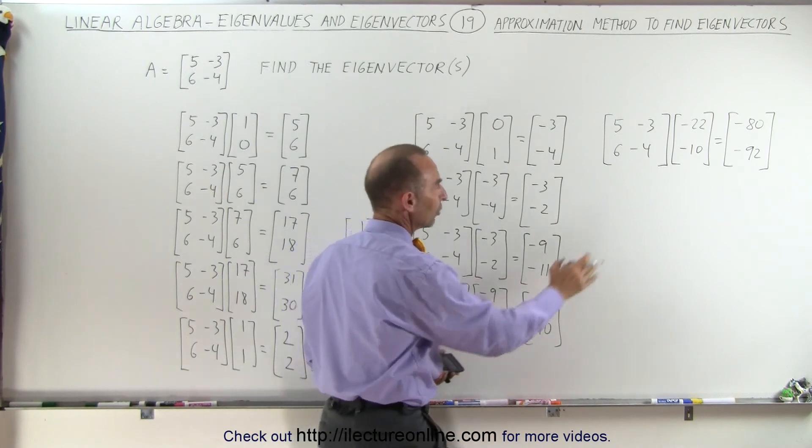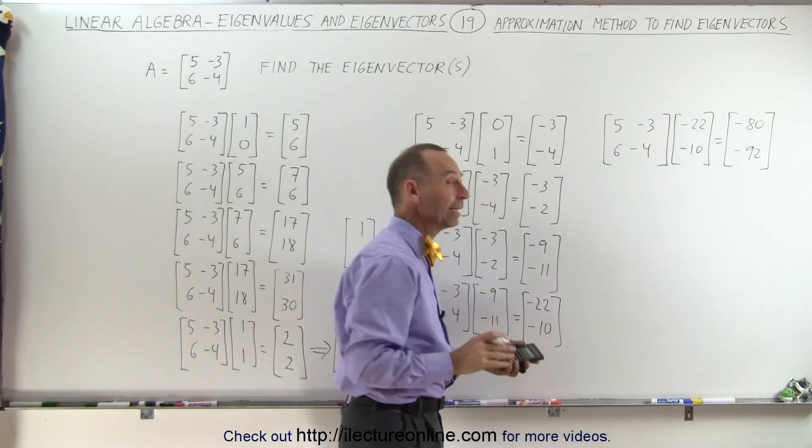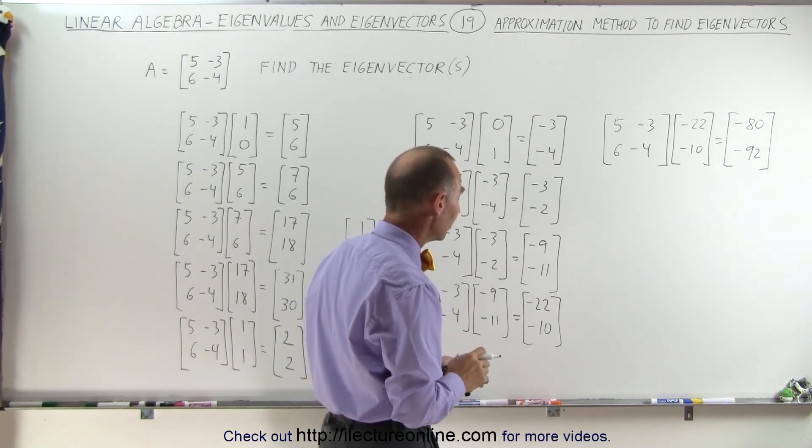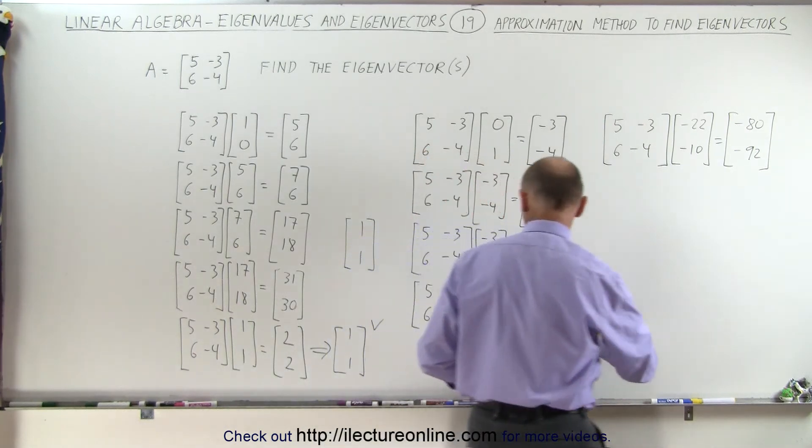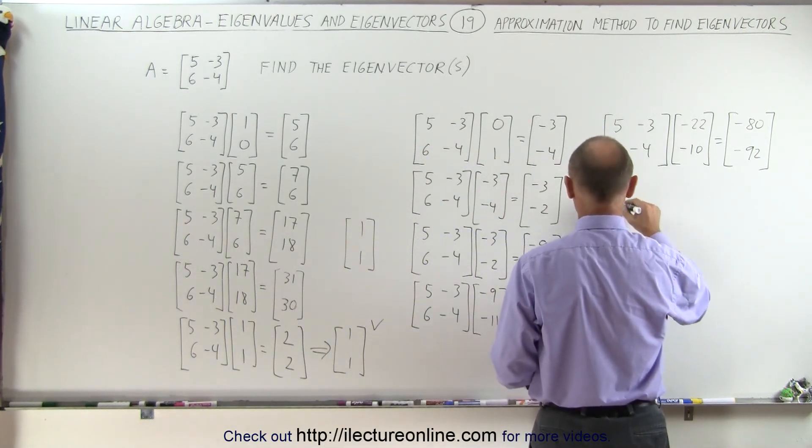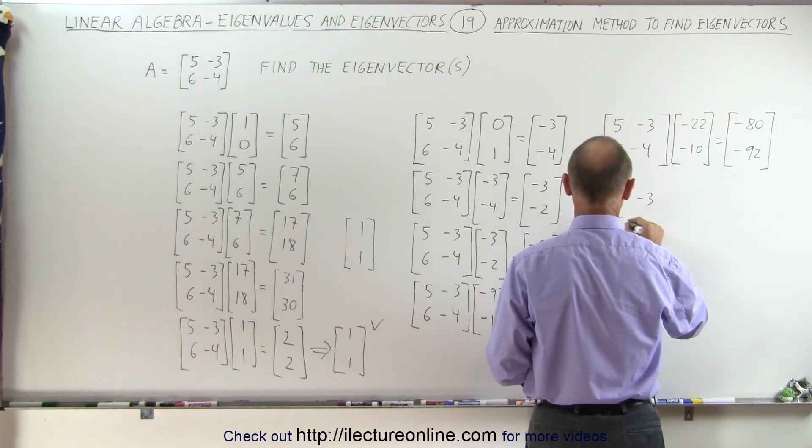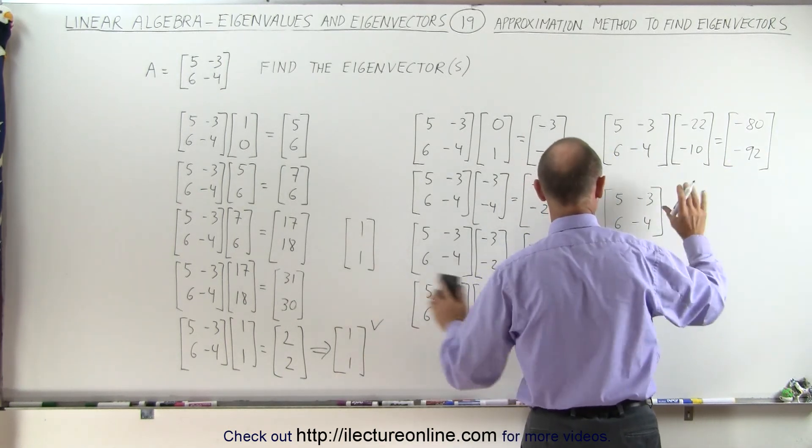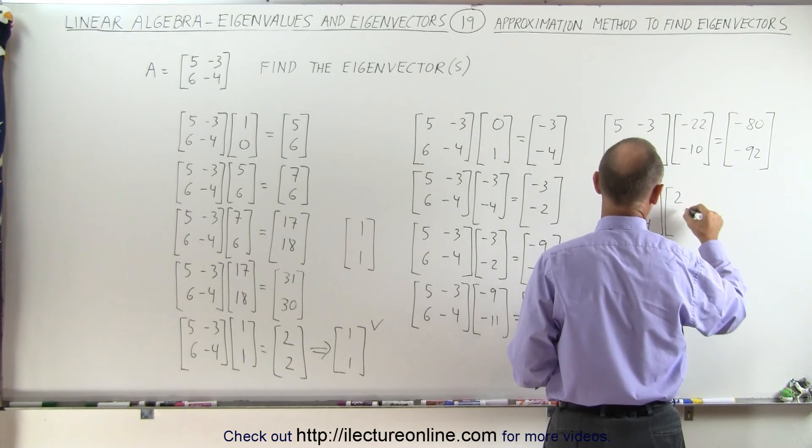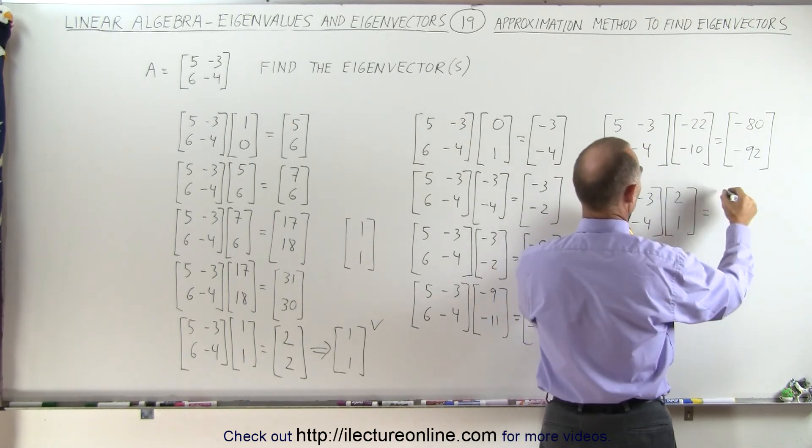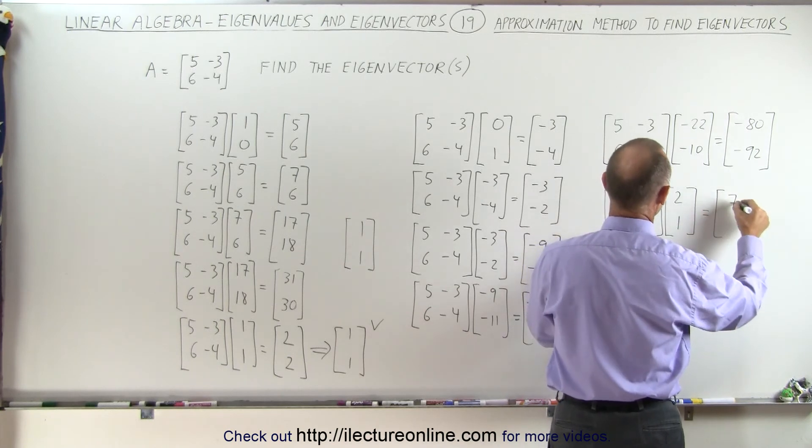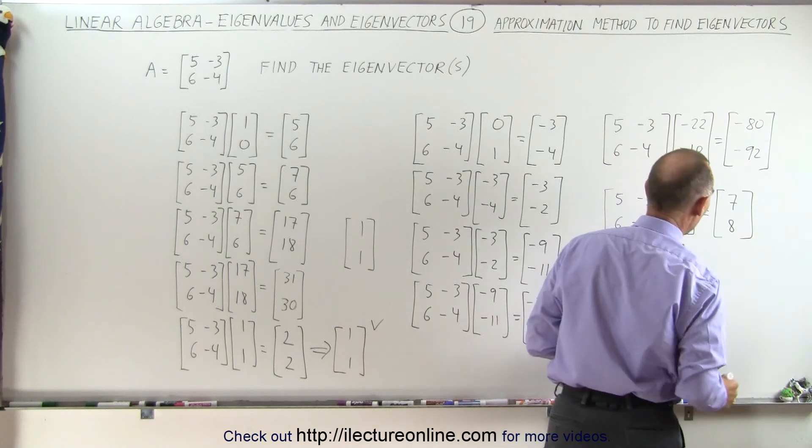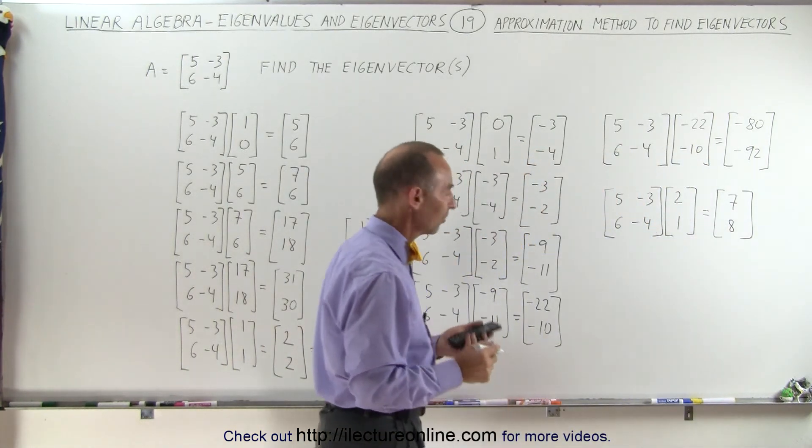Hmm. So I'm ping-ponging from a 2 to 1 ratio to a 1 to 1 ratio. It turns out that the other eigenvector is indeed a 2 to 1 ratio. So let's check to see if that's indeed the case, because I have this one right here. So I'm going to multiply 5, minus 3, 6, and minus 4. So what's happening is it seems to be ping-ponging between a 2 to 1 and a 1 to 1 ratio. So let's see if a 2 to 1 is indeed what I'm looking for. So this is equal to 10 minus 3, which is 7. And that's 12 minus 4, which is 8. And nope, that is not the correct eigenvector.